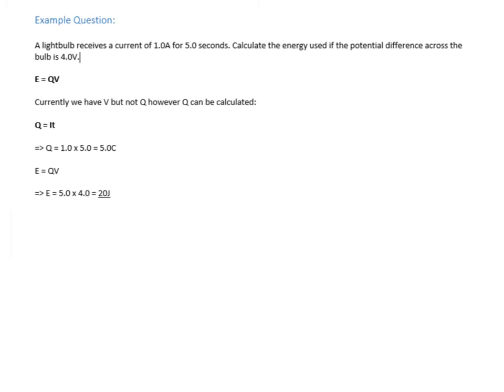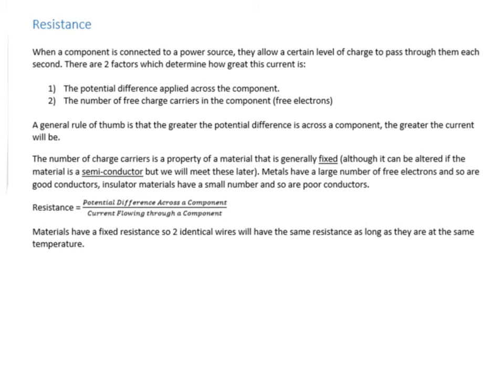Now let's look at resistance in a bit more detail. When you connect a component to a power source, it allows a certain amount of charge to pass through it every second. Two factors determine how great that current is: the potential difference applied across the component - generally, higher potential difference gives higher current - and the number of charge carriers, meaning the number of free electrons in the material.